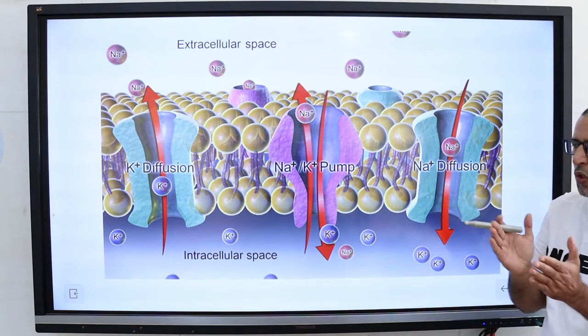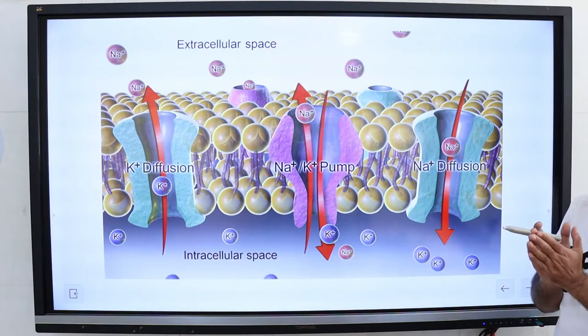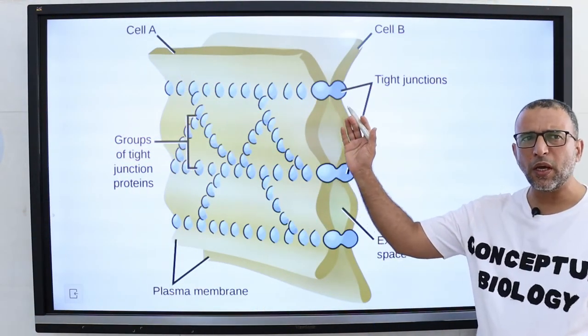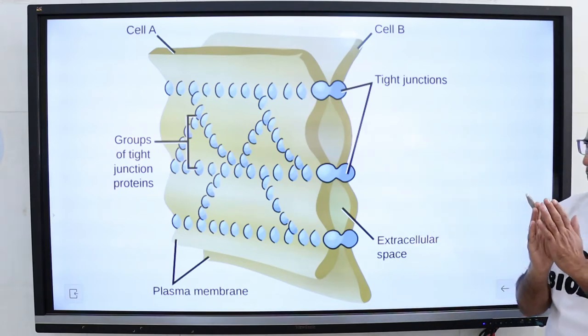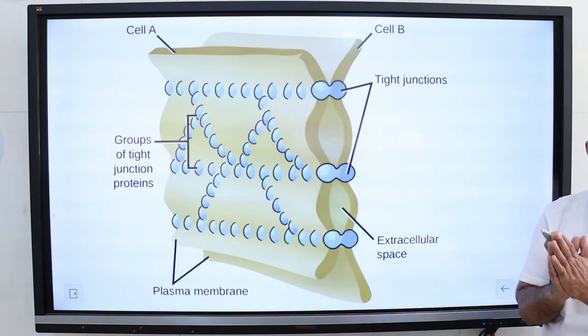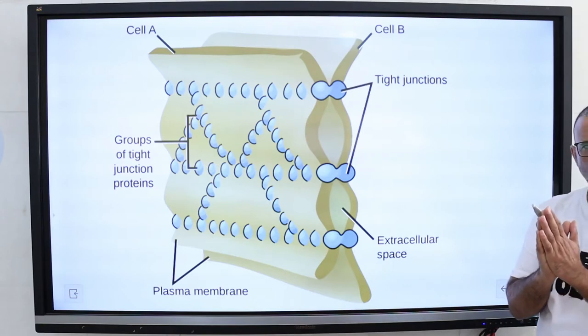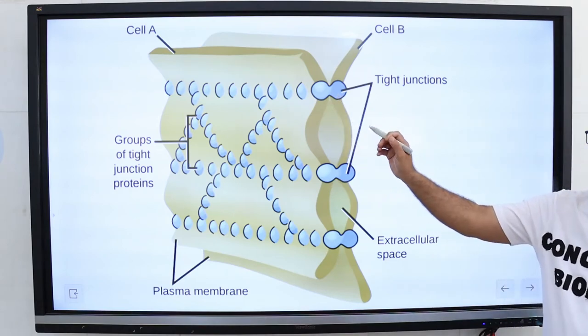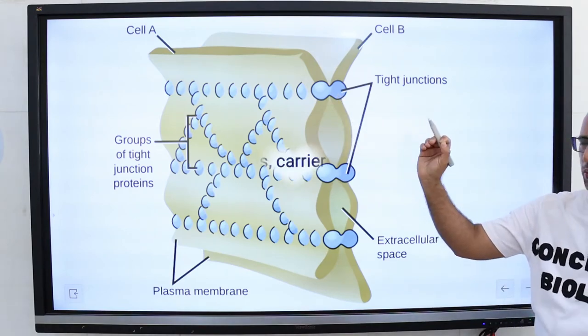There is no exchange of materials through tight junctions. Tight junctions are literally areas of tight connections between the membranes of adjacent cells, and these connections are so tight that no space remains between the cells and substances cannot leak between them.